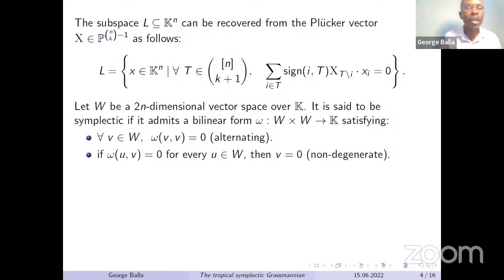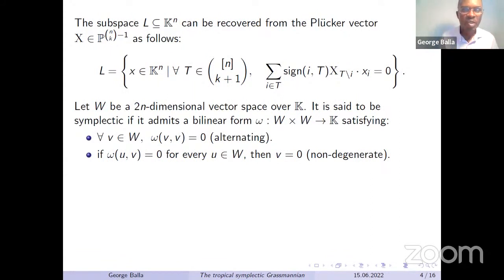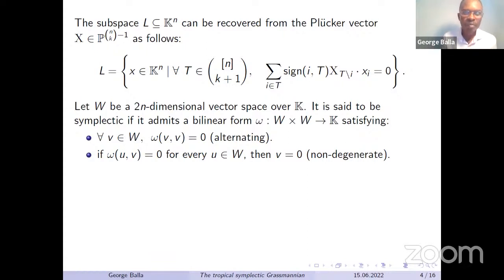Now I want to talk about the second kind of variety. The first was the Grassmannian; the second is the symplectic Grassmannian. For this one we need a vector space of even dimension, because we want to talk about a symplectic form.